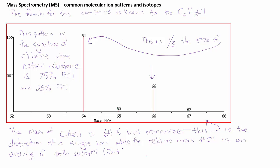The peak at 66 is two carbons, five hydrogens, and a chlorine whose mass is 37. So, this is quite common when we are looking for things like chlorine.